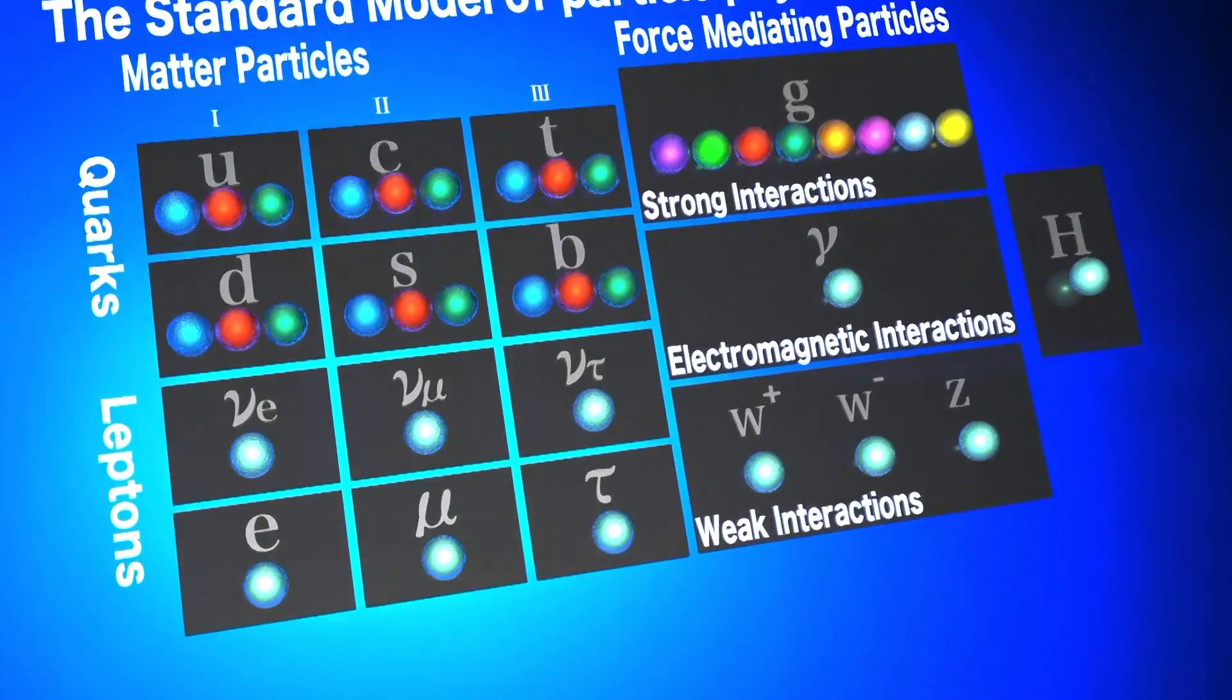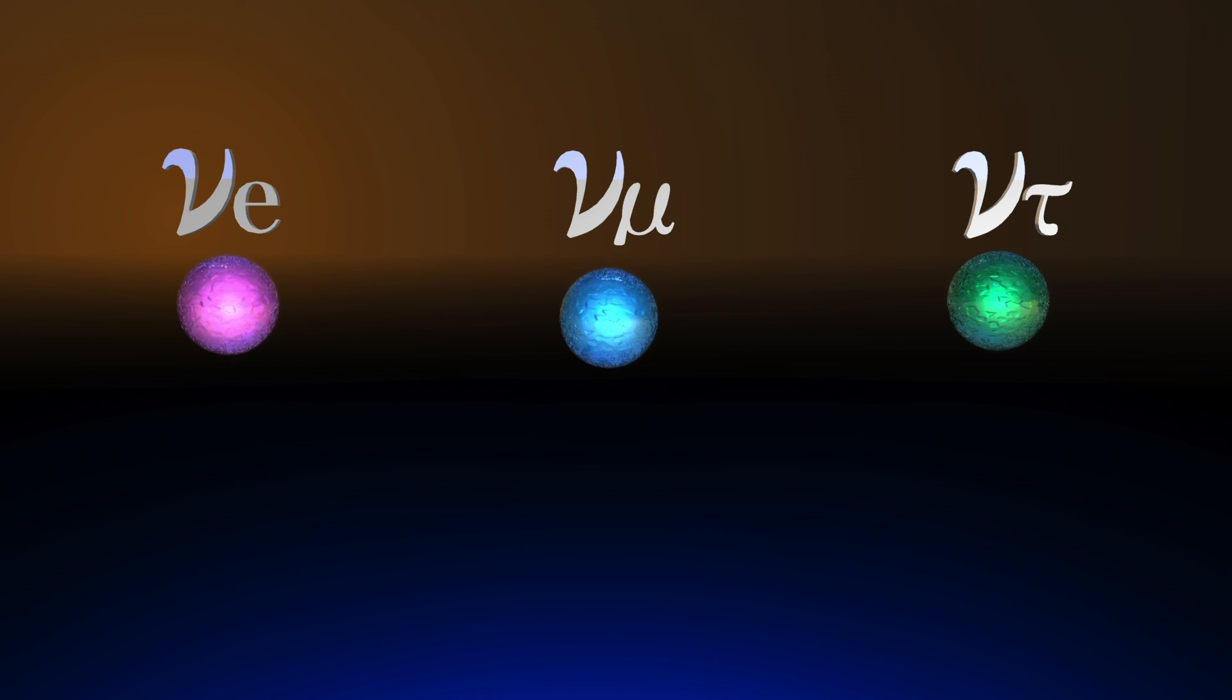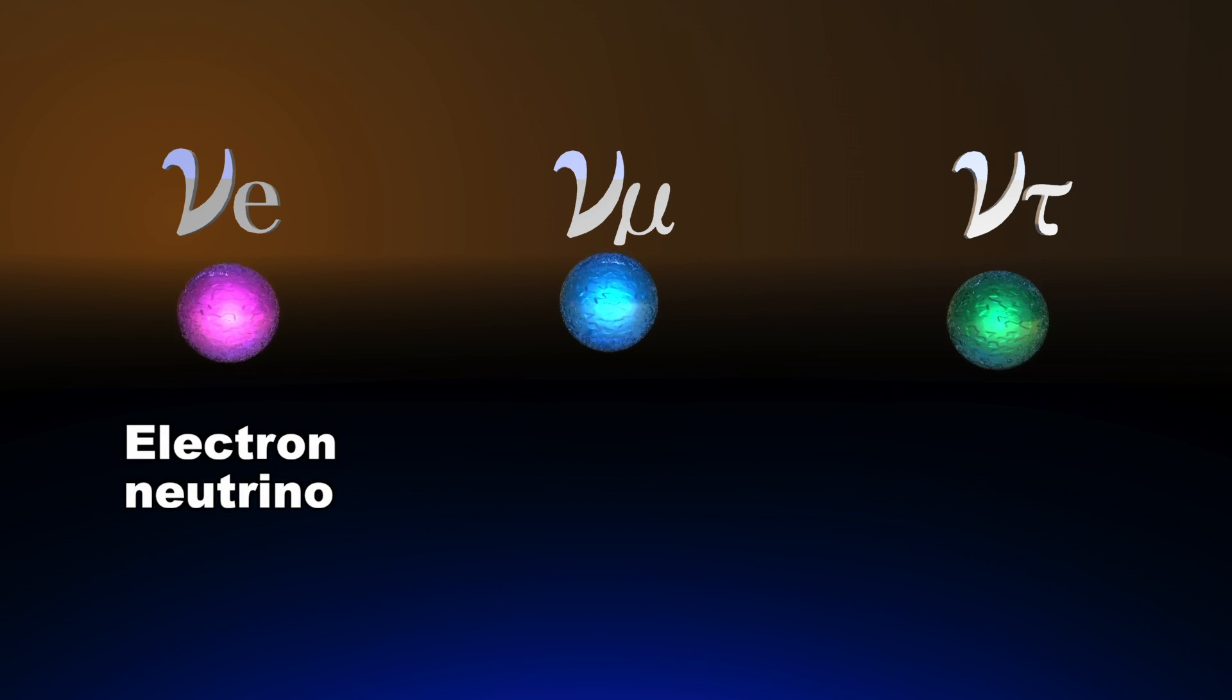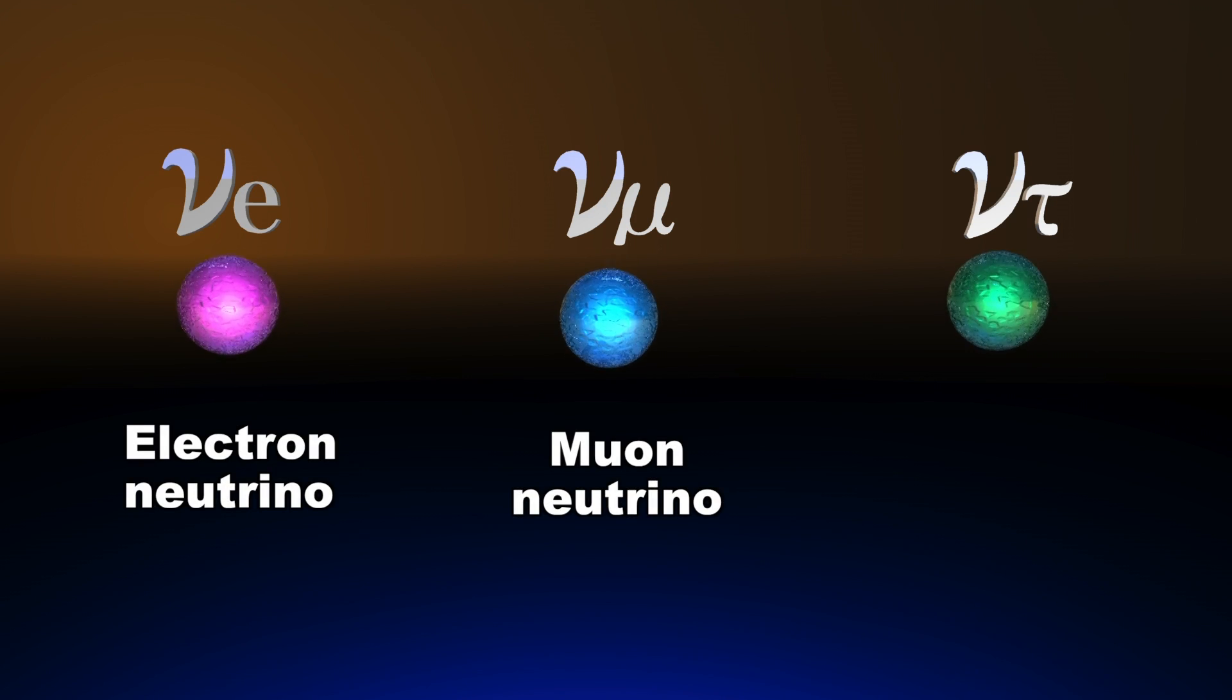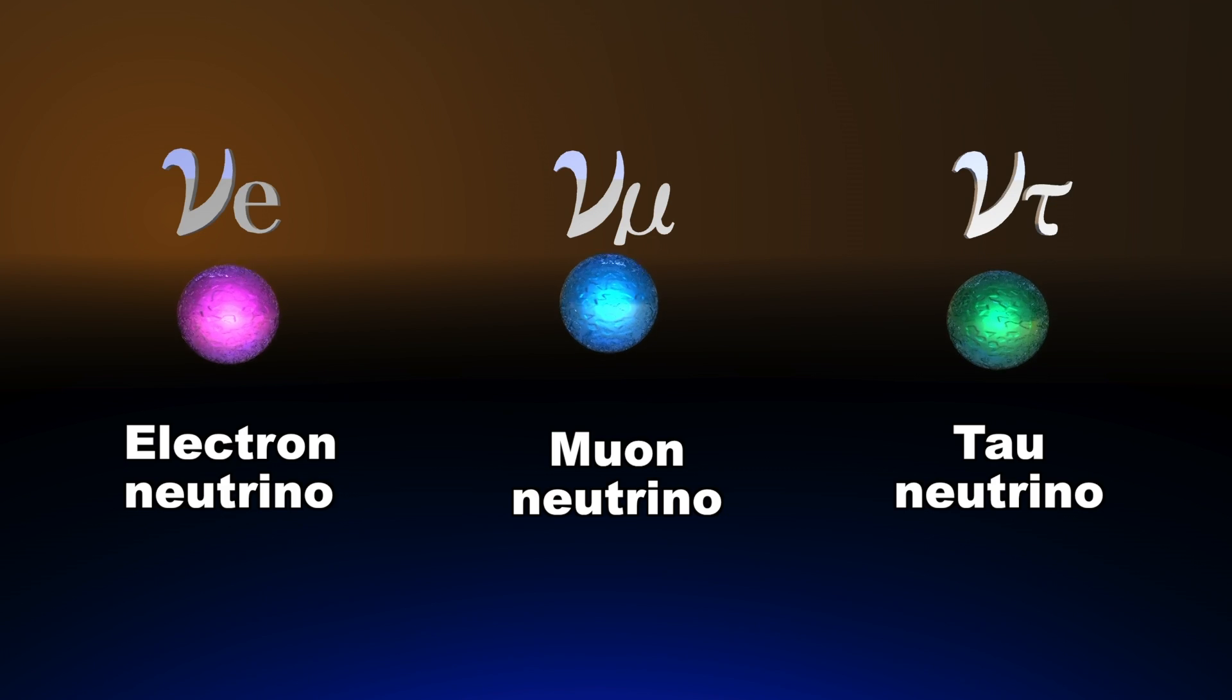Neutrinos are some of the particles which constitute matter. They come in three flavors: the electron neutrino, the muon neutrino, and the tau neutrino.